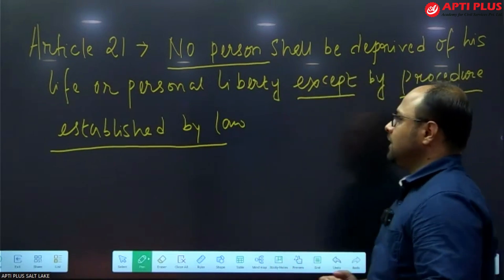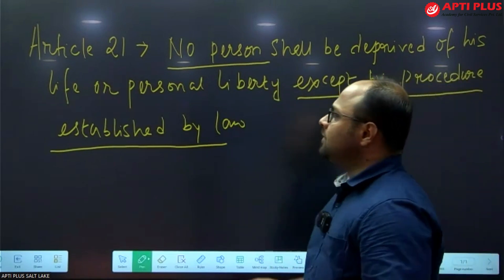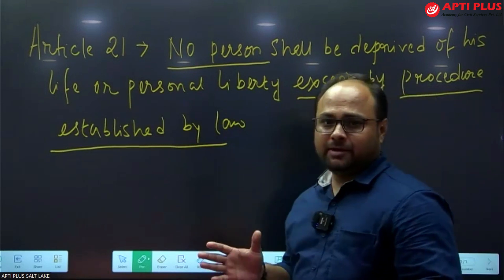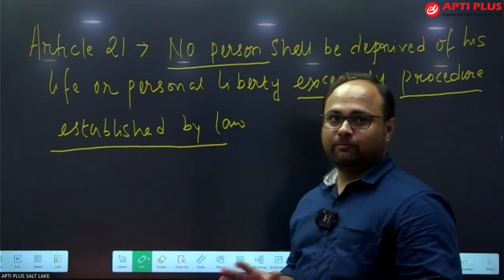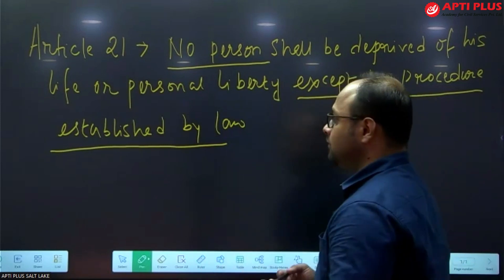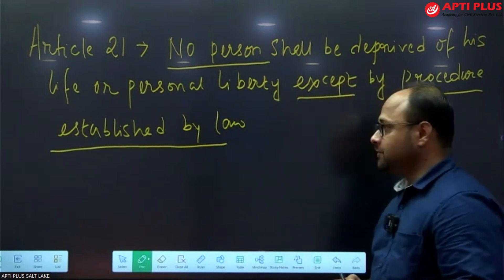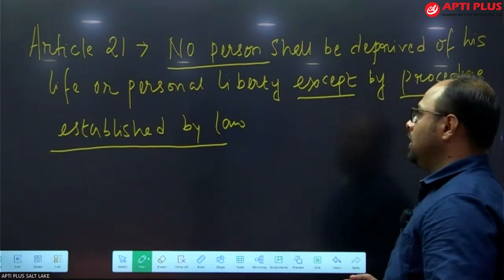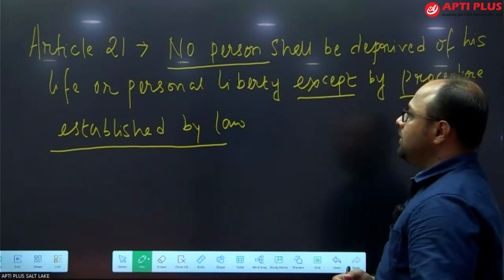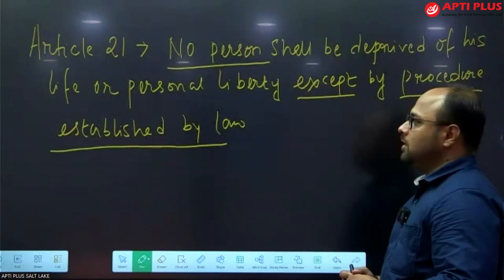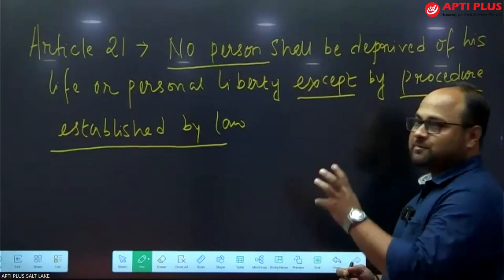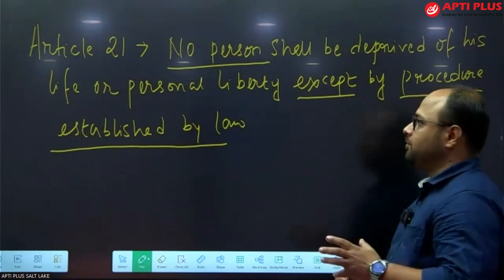Article 21 is the simplest looking article but at the same time the most evolved. The reason is that this article has been termed by the Supreme Court as the backbone of the fundamental rights. We have to look into a few aspects of this article.